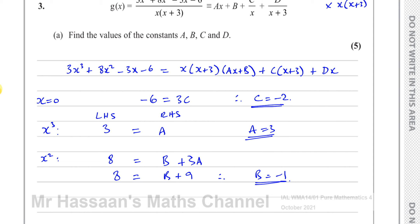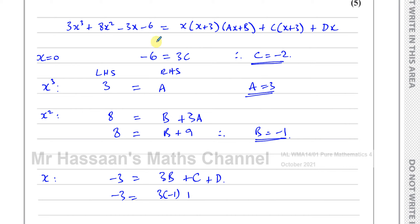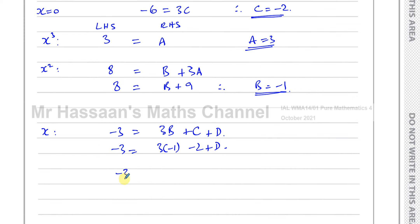Now for d, I'll compare the x terms. On the left I have negative three x. On the right, the x terms are: x times three times b gives three bx, plus c times x, plus d times x. We know c is negative two and b is negative one, so negative three equals three times negative one plus negative two plus d, which is negative three equals negative five plus d, giving d equals two.